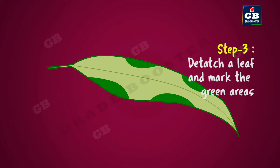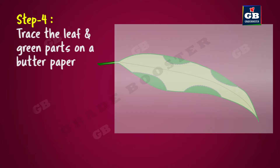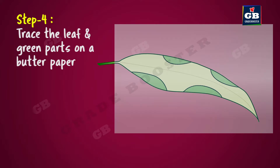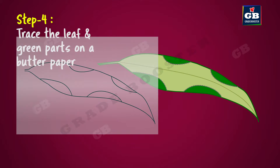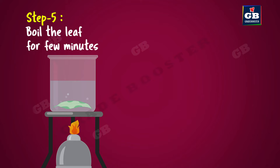Detach a leaf from the plant and mark the green areas of it. Now, trace the leaf and its green borders on a butter paper. Next, place the leaf in boiling water for a few minutes.